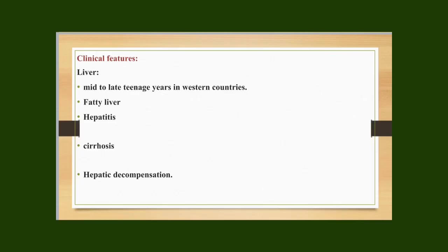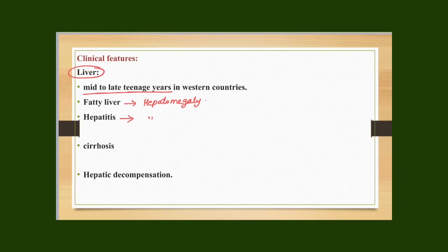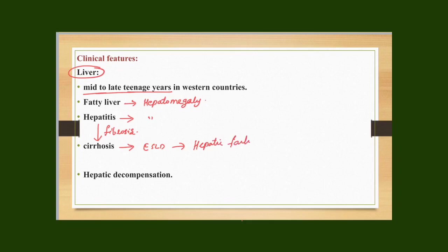Let's discuss the clinical features depending on the organ. Hepatic Wilson's usually starts in mid to late teenage years. Patients can present with fatty liver, and clinically with hepatomegaly, jaundice, and right upper quadrant pain. Hepatitis patients can also present similarly, sometimes with fever. Recurrent hepatitis, though often self-limited, can stimulate fibrosis in the liver and ultimately cause cirrhosis, which may lead to complete hepatic failure and death.